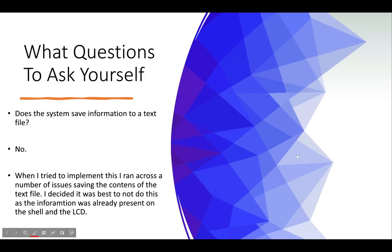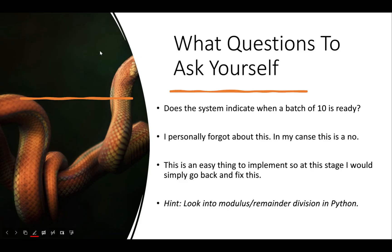Does the system save information to a text file? For my system, no — when I tried to implement this I ran into a number of issues. I decided it was best not to do this as the information was already present on the shell and on the LCD. I actually got it working perfectly fine, but I wanted to demonstrate that it's okay to say no if something doesn't work — just explain why. It could be that you don't know how to do text files properly and it keeps crashing, or you don't think it's necessary, or the file would grow very large given the Raspberry Pi Pico only has about two megabytes of storage.